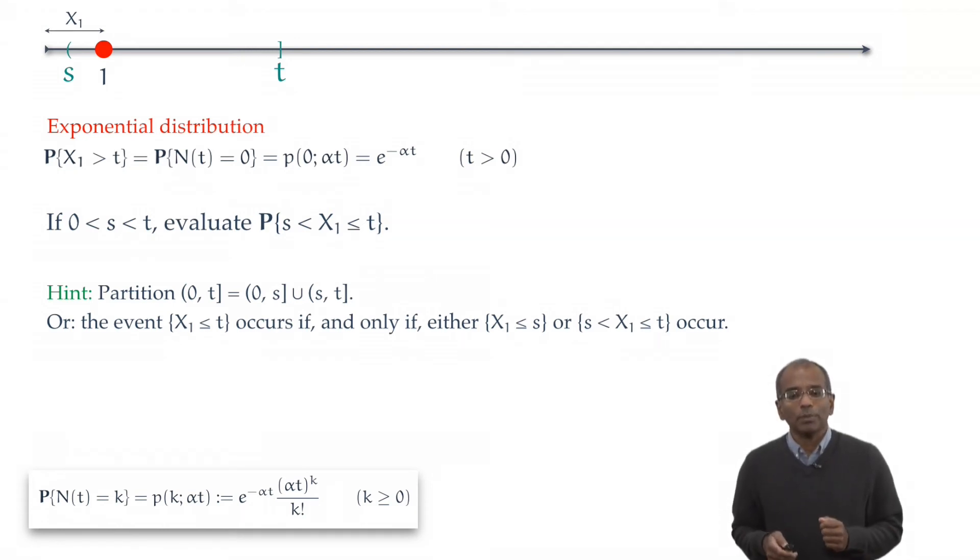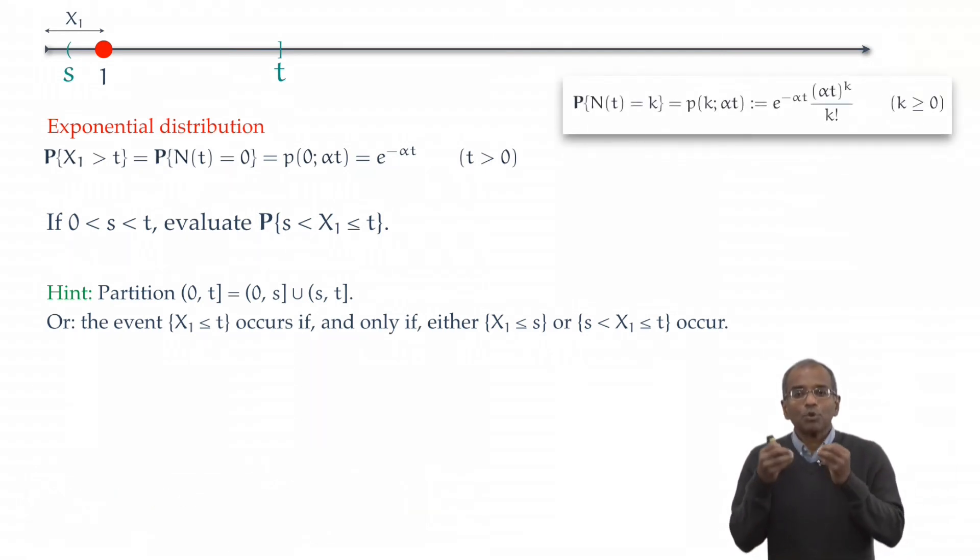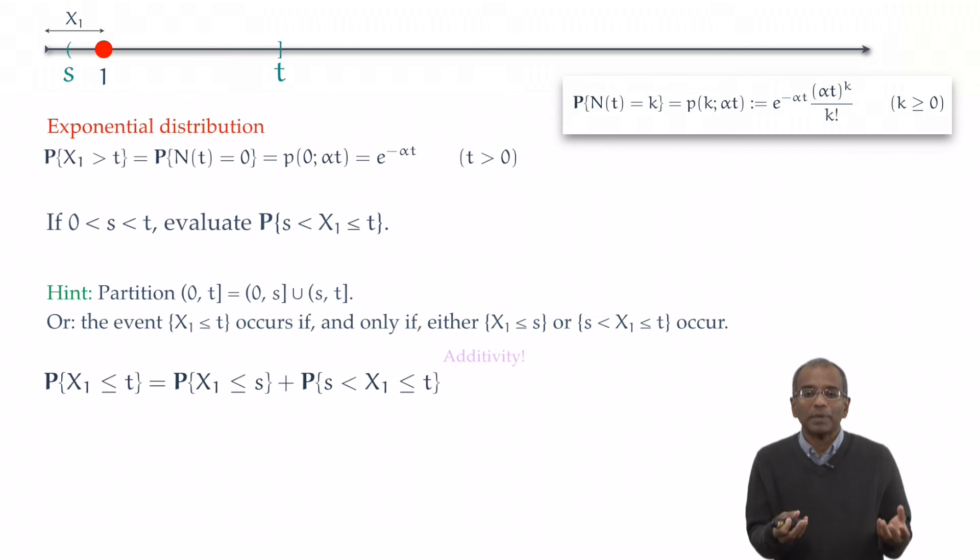Now, let's begin an assault on the problem. We know that the interval from 0 to t can be partitioned into two subintervals, one from 0 to s, and one from s to t. The additivity of probability measure tells us, therefore, that the probability that the first arrival is at or before t is a sum of two probabilities: that the first arrival is at or before s, together with the probability that the first arrival is between s and t.